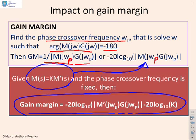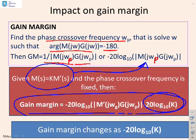You get the gain margin is given as minus 20 log to the base 10 of the modulus of m dash times g. And then minus 20 log to the base 10 of K. And so you'll notice the gain margin is changing by this term at the end. So the gain margin changes by minus 20 log to the base 10 of K. And that's a very simple formula.